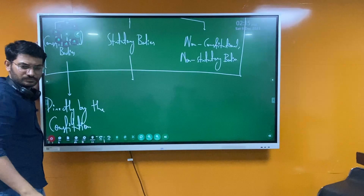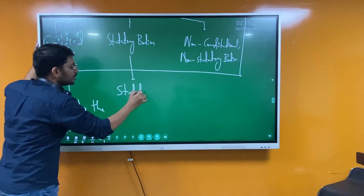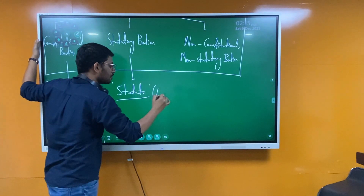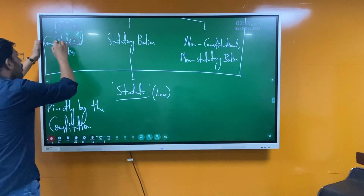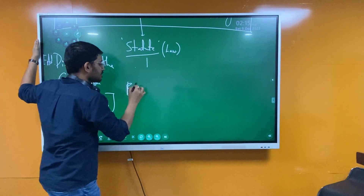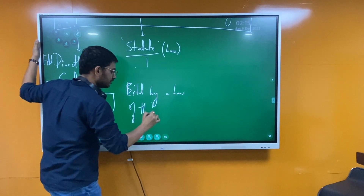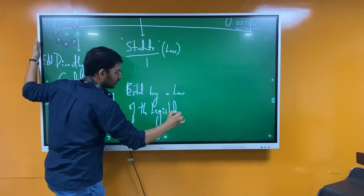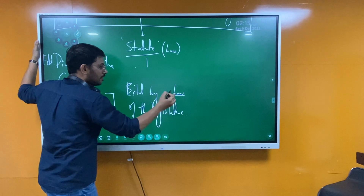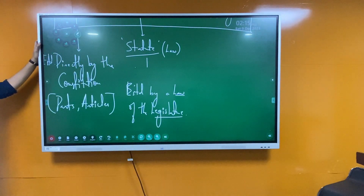Coming to statutory bodies — what are they? The name comes from 'statute,' which means a law. All political institutions established by a law of the legislature — whether a union legislature or state legislature — become known as statutory bodies.